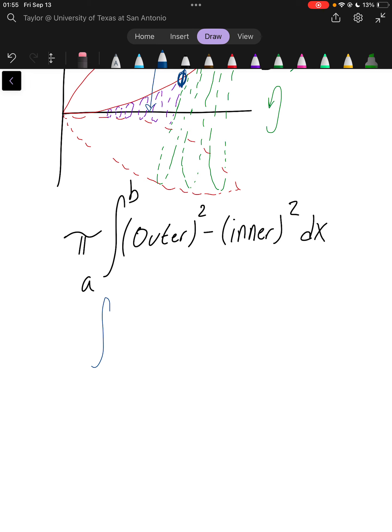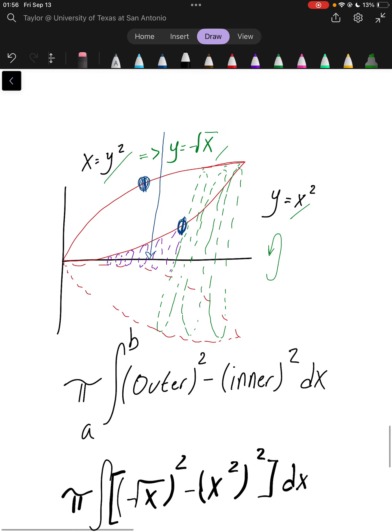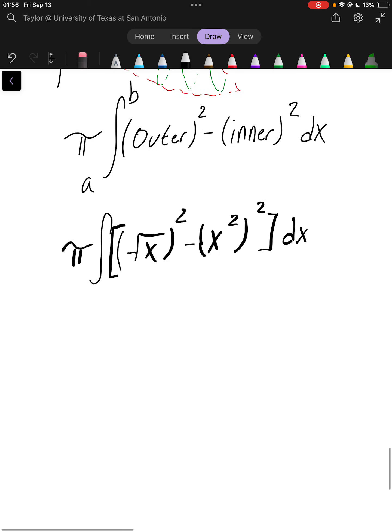Integral, square root x squared minus x squared, squared, dx times pi. Okay. And then we look, we see that our bounds are from 0 to 1. Okay, so 0 to 1.